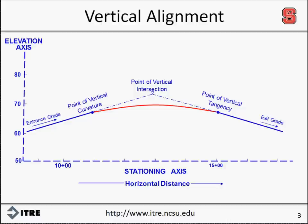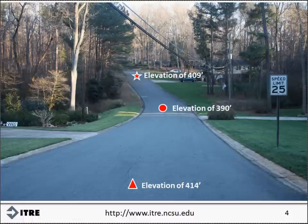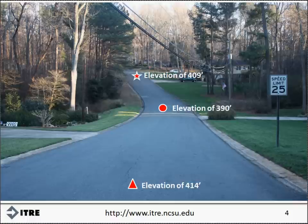Let's take a look at a few pictures and discuss the vertical and horizontal elements in each. Consider this short section of a residential street with one vertical curve and one horizontal curve. There's a slight horizontal curve to the left between the triangle and the star. The triangle in the foreground has an elevation of 414 feet, the circle at the midpoint has an elevation of 390 feet, and the star at the end has an elevation of 409 feet. These elevations demonstrate the presence of a sag vertical curve, with a downhill grade leaving the triangle, a flat grade near the circle, and an uphill grade approaching the star.